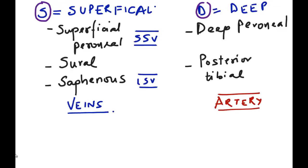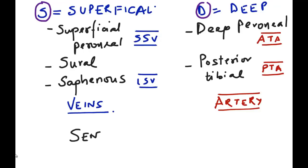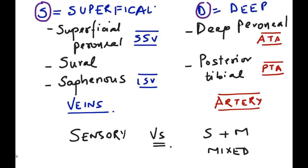The deep peroneal nerve accompanies the anterior tibial artery, and the posterior tibial nerve accompanies the posterior tibial artery. It is also important to note that the superficial nerves are generally only sensory, whereas the deep nerves are both sensory and motor — they are mixed nerves.